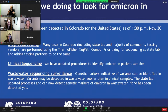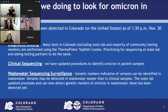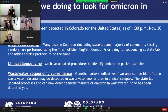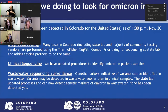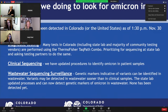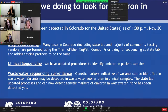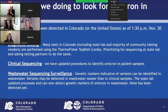Many tests in Colorado, including at the state laboratory and most community testing vendors, use the Thermo Fisher TAC-Path combo test, which allows us to prioritize samples for sequencing based on the test's profile. This test has three targets in the COVID-19 genome, one of which is the spike target, which may not show up well for the Omicron variant given that it contains deletions within this section. Any sample with this spike drop profile is immediately forwarded for clinical sequencing. An additional way we can look for Omicron is through wastewater sequence surveillance. None have been detected yet.